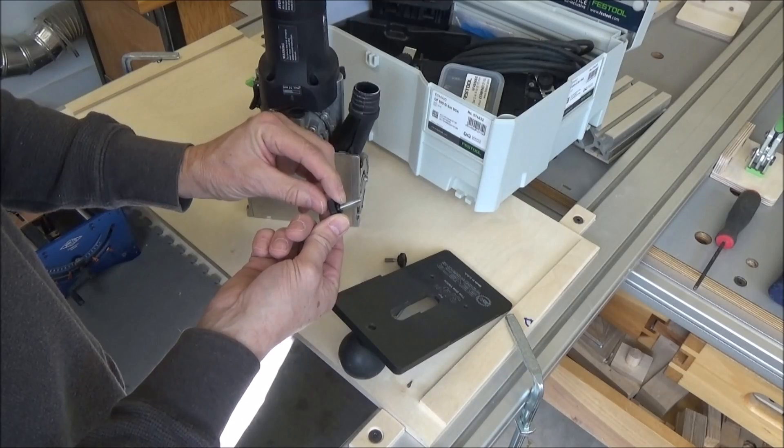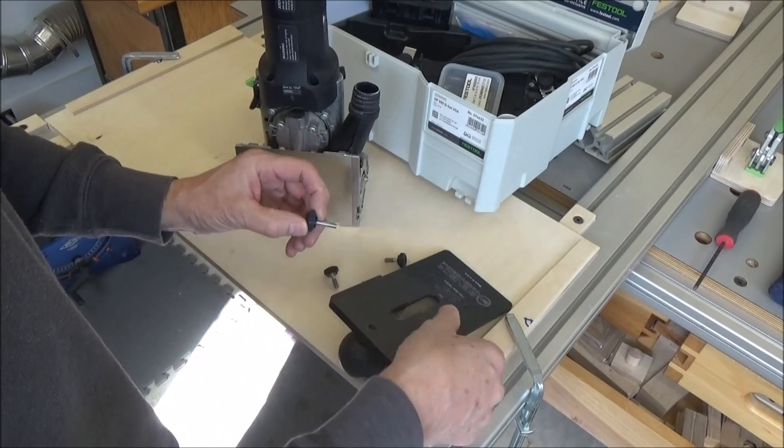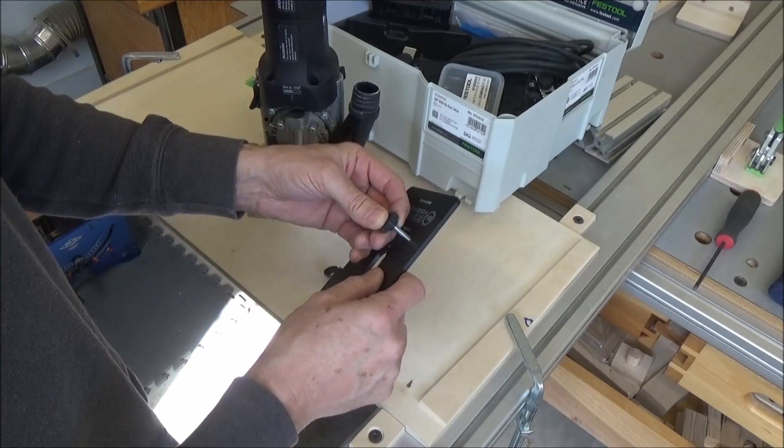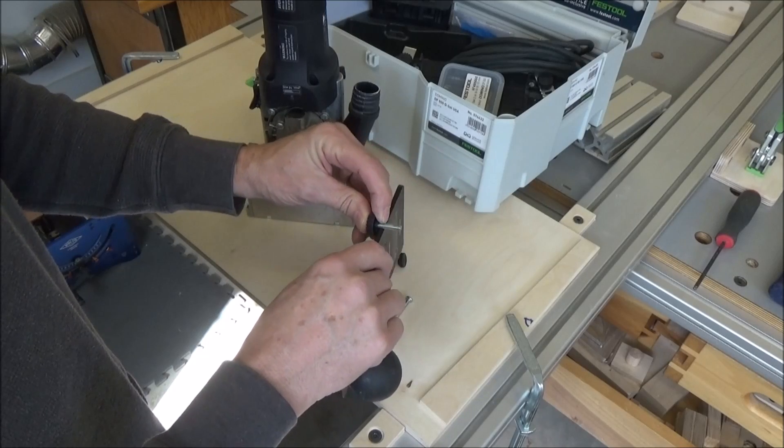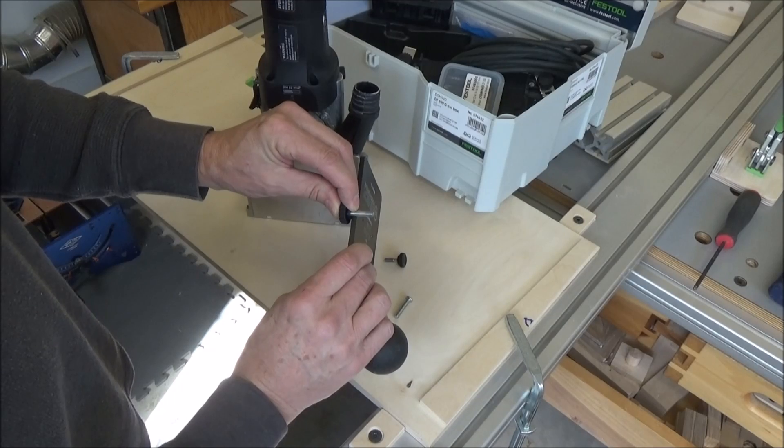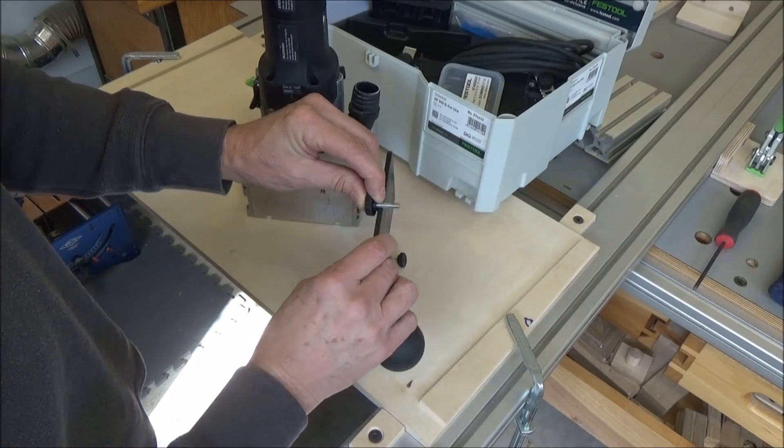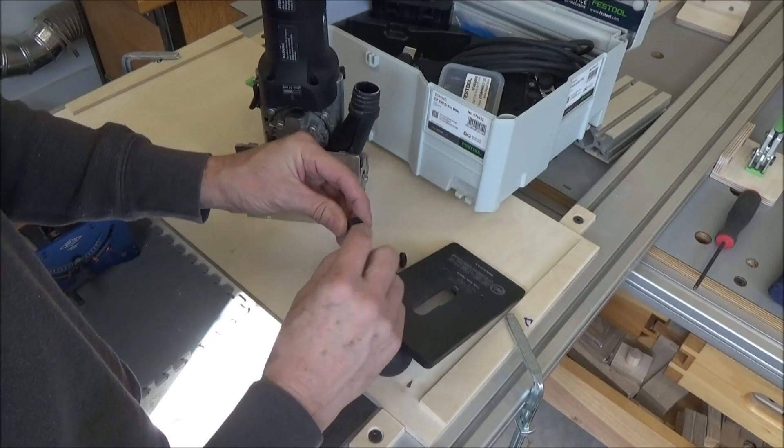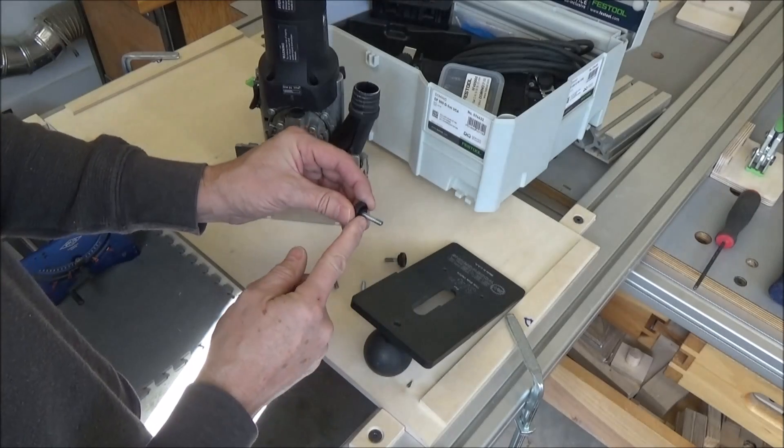I'm going to take and remove the threads there, so that when it gets past that threaded portion there, you'll see how much I have to remove. That's that amount right there, about a quarter of an inch. So I'm going to tape this off and use a hand file and smooth that area out.